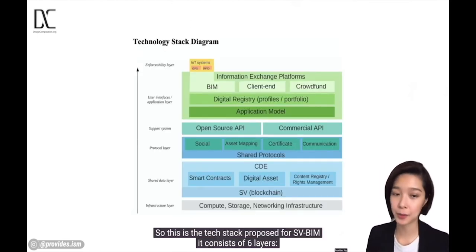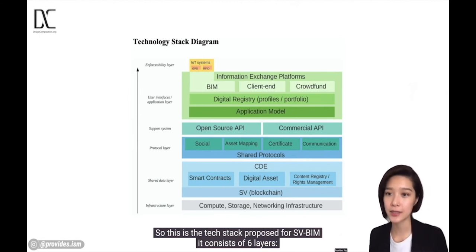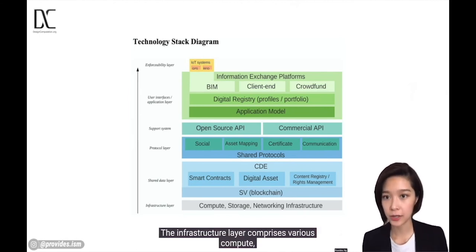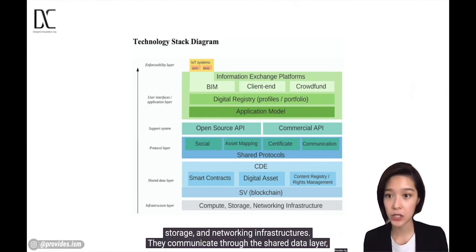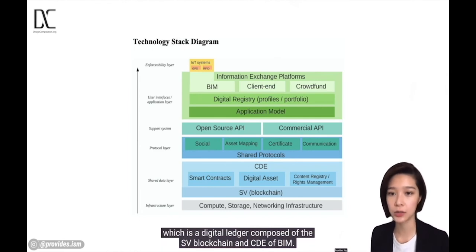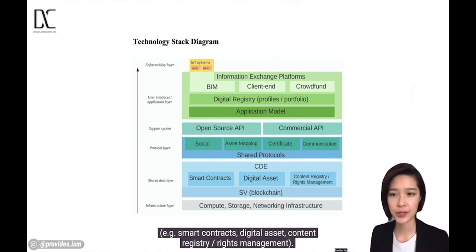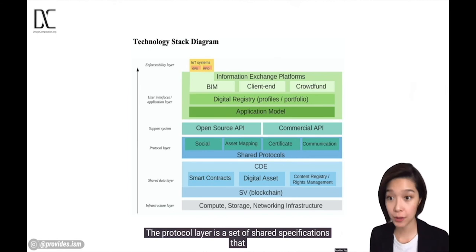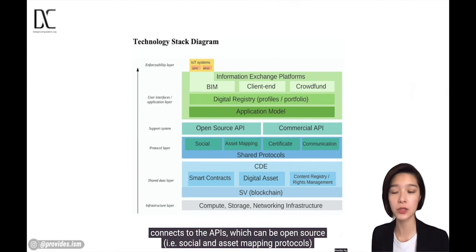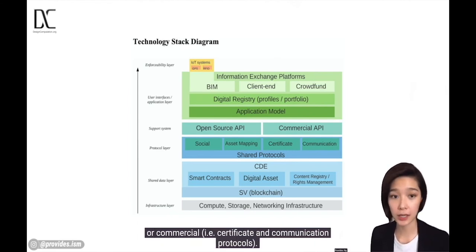This is the tag stack proposed for SVBIM. It consists of six layers. The infrastructure layer comprises various compute, storage, and networking infrastructures. They communicate through the shared data layer, which is a digital ledger composed of the SV blockchain and the CDE of BIM. The ledger records transactions across the network — for instance, smart contracts, digital assets, content registries, and rights management. The protocol layer is a set of shared specifications that connects to the APIs, which can be open-sourced like social and asset mapping protocols, or commercial like certificate and communication protocols.